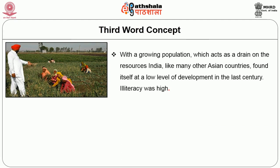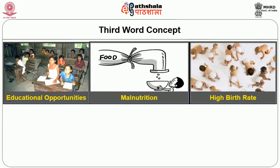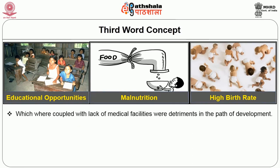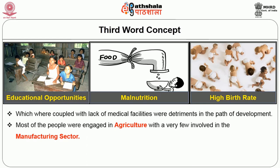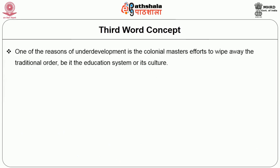With a growing population acting as a drain on resources, India, like many other countries, found itself at a low level of development in the last century. Illiteracy was high, a majority of people lived in neglected rural areas, educational opportunities were limited, malnutrition was common, and high birth rates coupled with lack of medical facilities hindered development. Most people were engaged in agriculture with very few in the manufacturing sector. Low life expectancy and high mortality rates, especially among women and children, led to rising frustration. One reason for underdevelopment was colonial masters' efforts to wipe away the traditional order, including the education system and culture.